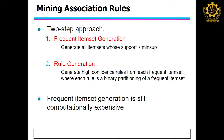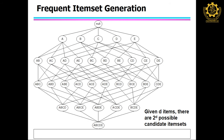The first part is frequent itemset generation — we generate all frequent itemsets, meaning each itemset's support is above some threshold. Once you generate those, the second step is rule generation. For example, if ABC is one frequent itemset, you can generate rules: A to BC, B to CA, C to AB, A to B, B to C, C to A, and so on. After generation, you have to find the confidence. The entire task is divided into two steps: first generate frequent itemsets, second generate rules.